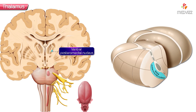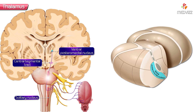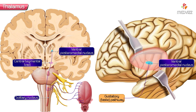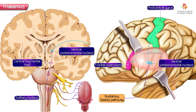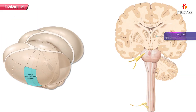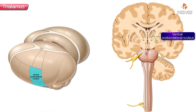The gustatory pathway — the pathway of taste — originates in the solitary nucleus and projects via the central tegmental tract to the ventral posteromedial nucleus, and then to the gustatory cortex of the post-central gyrus, frontal operculum, and insular cortex. The taste pathway is ipsilateral.